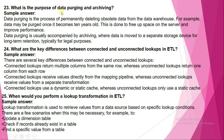What is the purpose of data purging and archiving? Data purging is the process of permanently deleting obsolete data from the data warehouse — for example, data may be purged once it becomes 10 years old. This is done to free up space on the server and improve performance. Data purging is usually accompanied by archiving, where the data is moved to a separate storage device for long-term retention, typically for legal purposes.